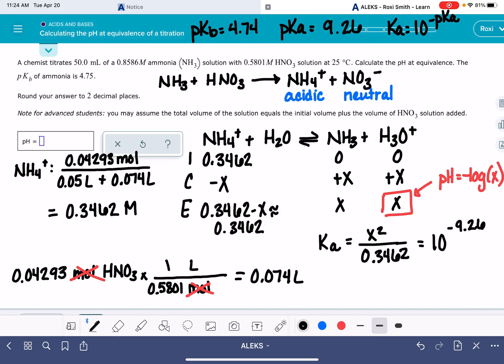Now we can solve for x. We're going to do 0.3462 times Ka, 10 to the negative 9.26, and then take the square root of that. x is 1.379 times 10 to the minus 5. x is the H3O+ concentration. pH is the negative log of x. Negative log of x is 4.86.